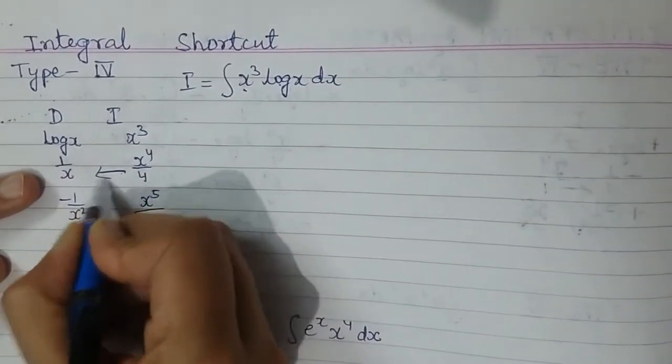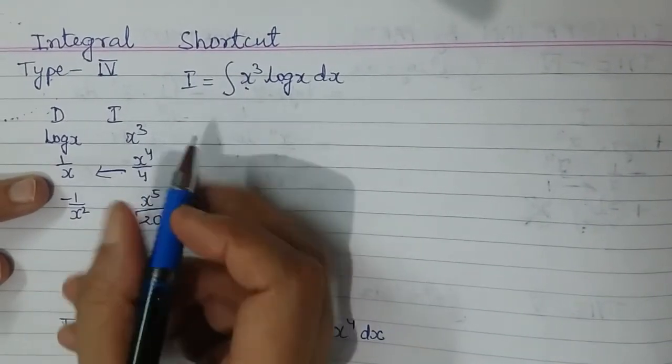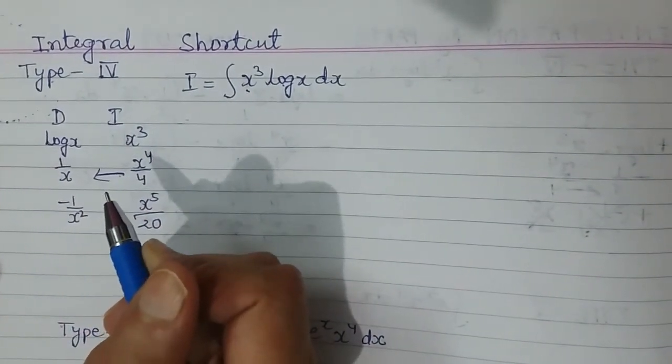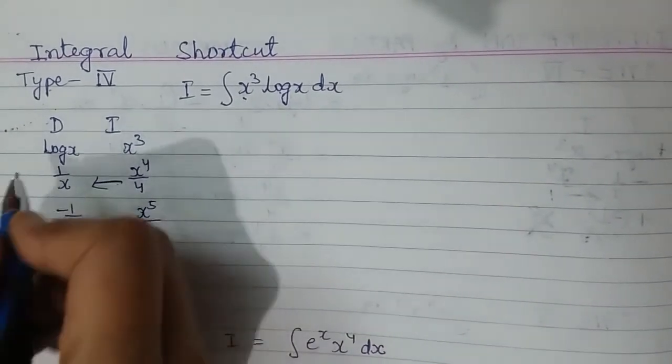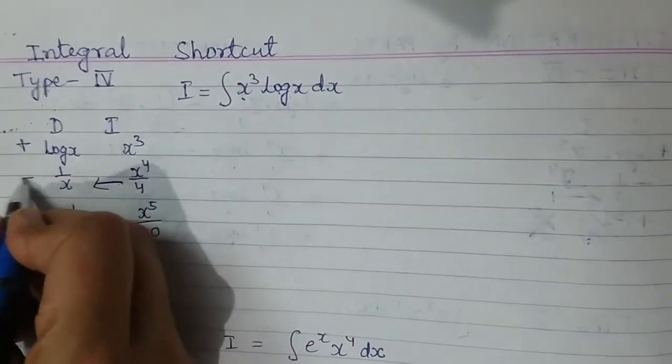If I multiply these two, I will be getting x cube, that will be very easy to integrate. So as discussed in my previous videos, my trick is I will choose this one positive, this negative, this positive.